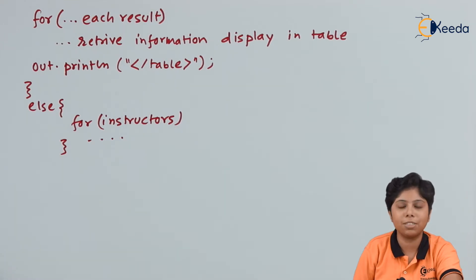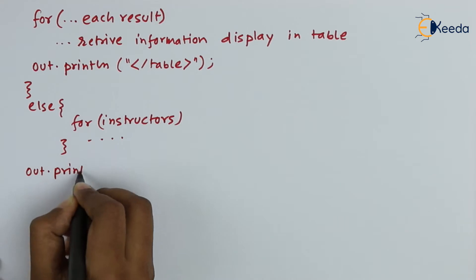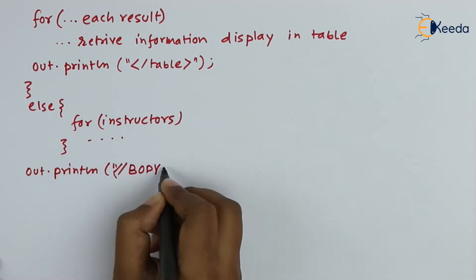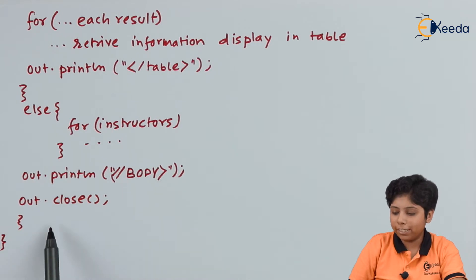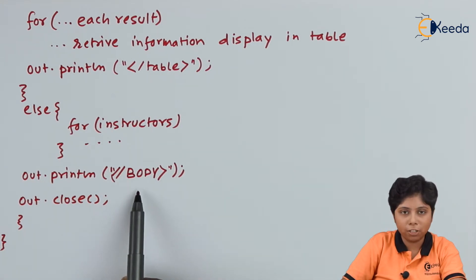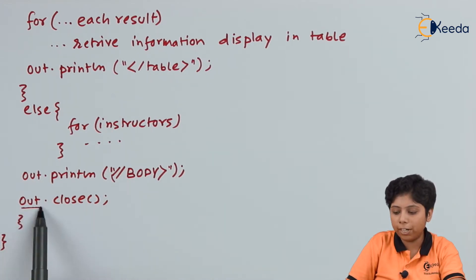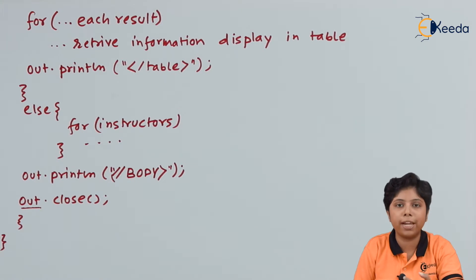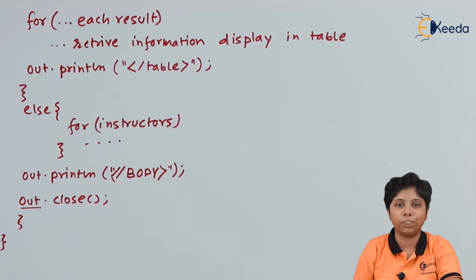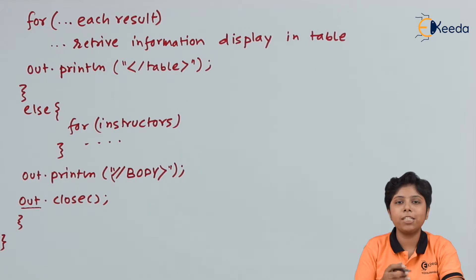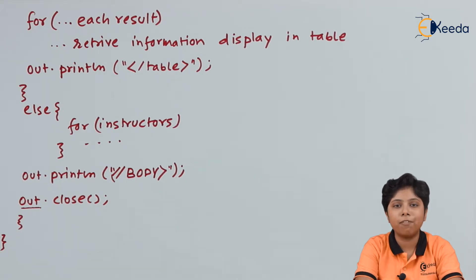We put the information into the table, then close the table. For instructors, we would similarly write all the documents. After the body close tag, the 'out' variable used to write the data to the result is closed with the close function. This is an example of a Java servlet.